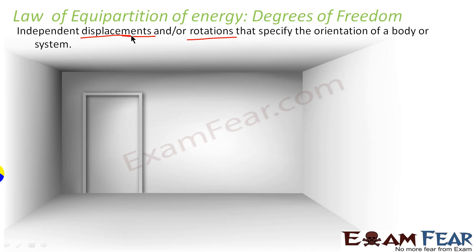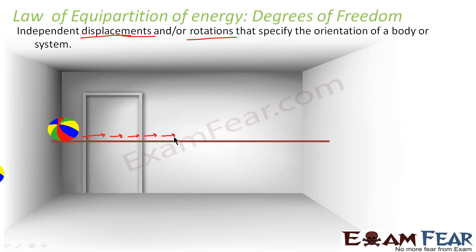For example, let us consider this room. Suppose I tie a rope from one wall to the opposite wall. Now I take a ball — what do you think will be the degree of freedom, or in what ways can the ball move on this particular rope? There is no other way of moving for this ball other than moving straight along the rope. So this ball will have one degree of freedom — it can move only in one particular dimension.